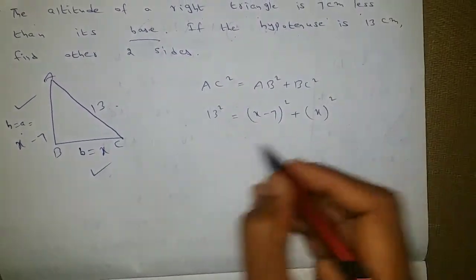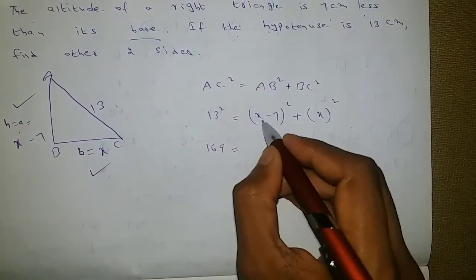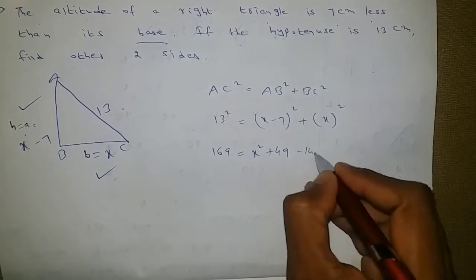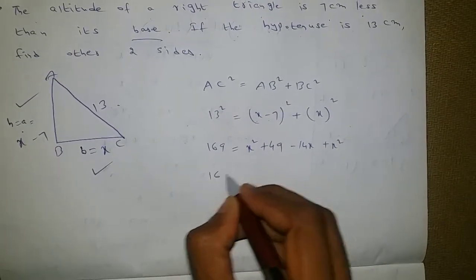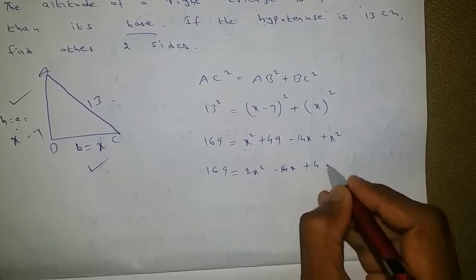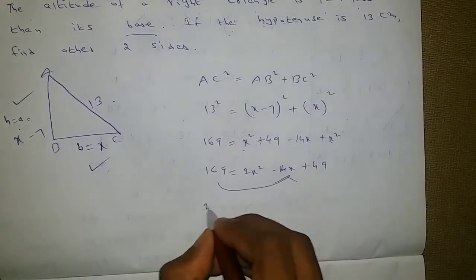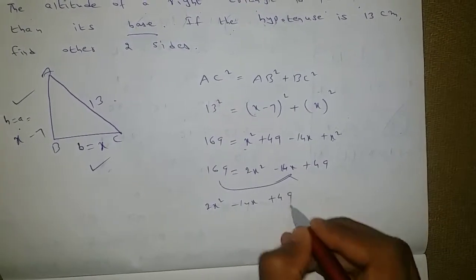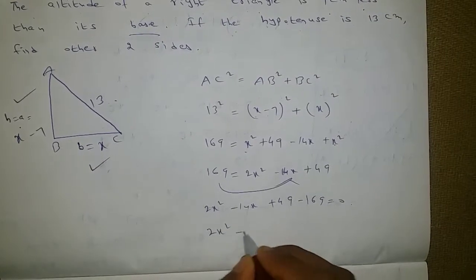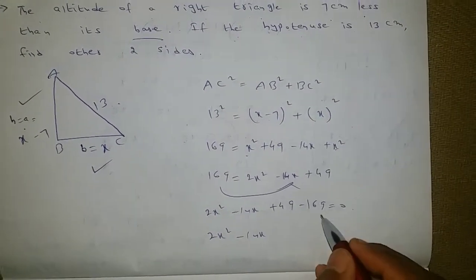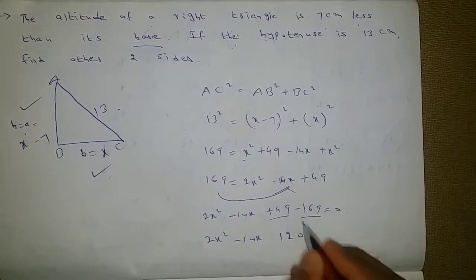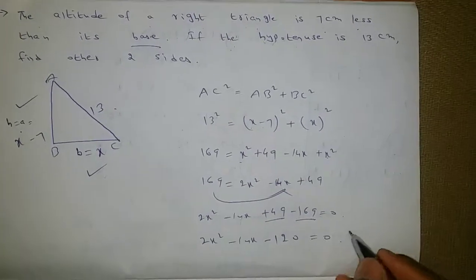Expanding: 169 equals x squared plus 49 minus 14x plus x squared, which gives 169 equals 2x squared minus 14x plus 49. Bringing 169 to the right side: 2x squared minus 14x plus 49 minus 169 equals 0, so 2x squared minus 14x minus 120 equals 0.